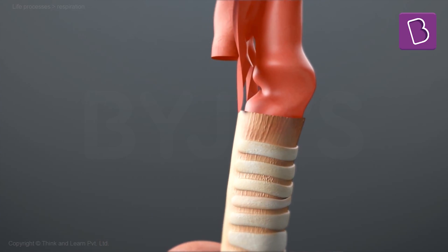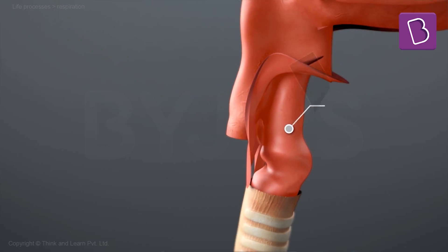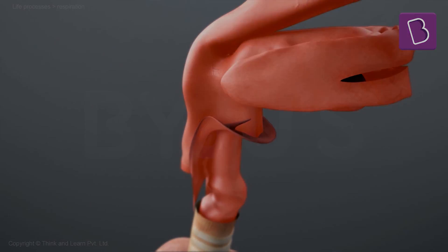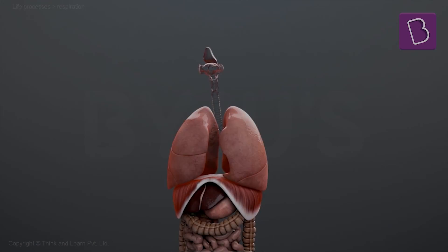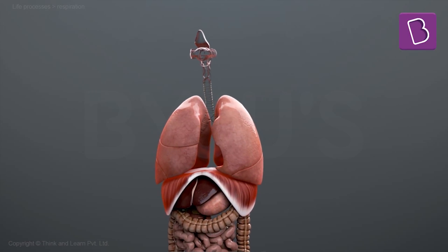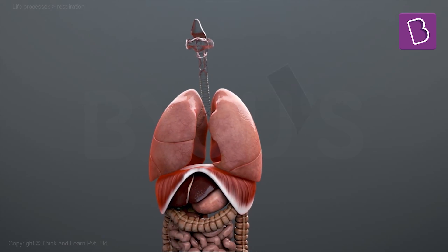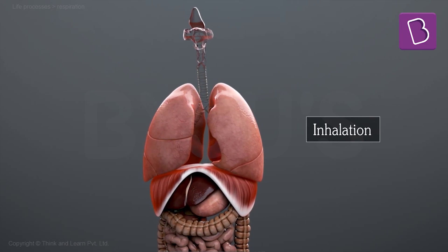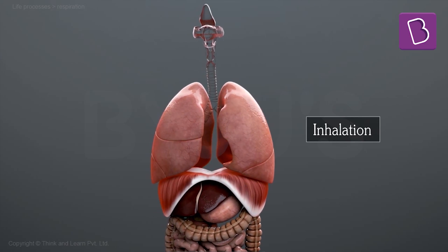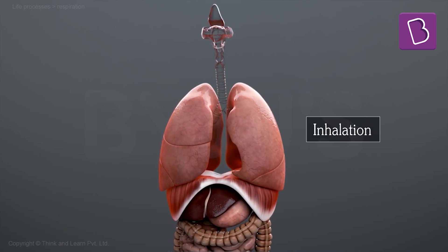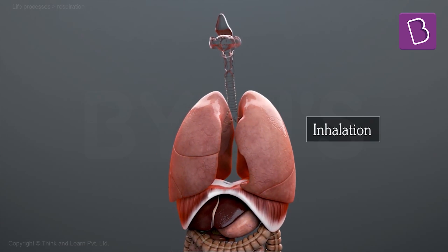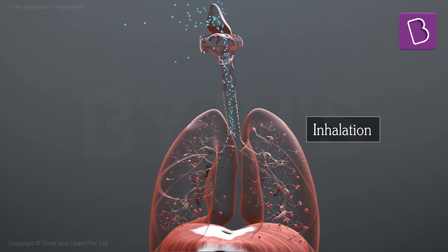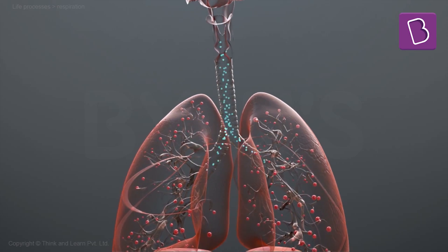The trachea leads into the pharynx which is connected to the nostrils. The process of breathing in air rich in oxygen is called inhalation. After the contraction of the muscular diaphragm, the lungs expand and the air rushes in, resulting in the inflation of the alveoli.